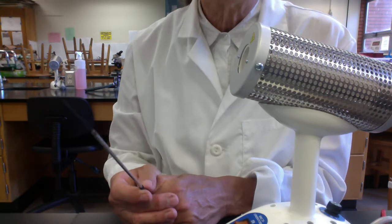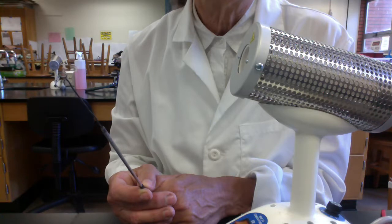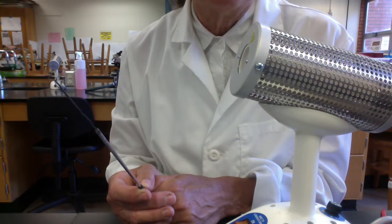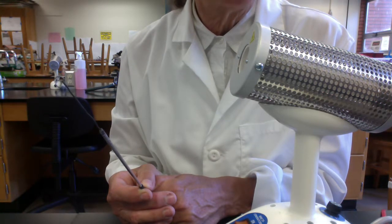And you want to make sure that the loop is allowed to cool before you touch your microbes. If you touch your microbes too quickly, the loop will be so hot it will incinerate your microbes. It will kill your microbes. So let your loop cool maybe five to 10 seconds.